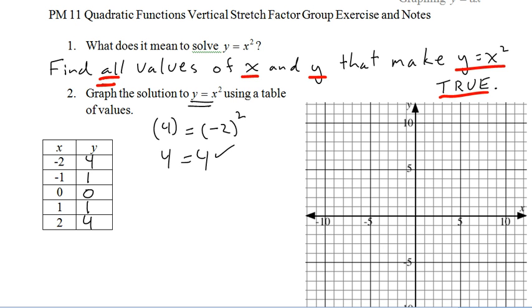So let's see where these go on our graph here. Negative 2, 4 is going to be here. Negative 1, 1. 0, 0. 1, 1. 2, 4. And let's just add a couple more points to see where this is going. If I have negative 3 and 9, that would also make it true. And 3 and 9. x equals 3, y equals 9 would also make that true.